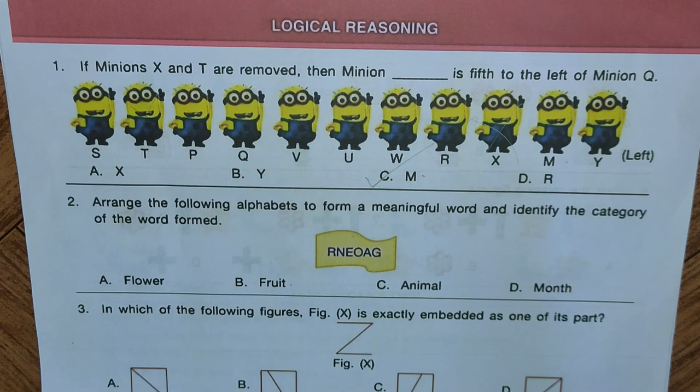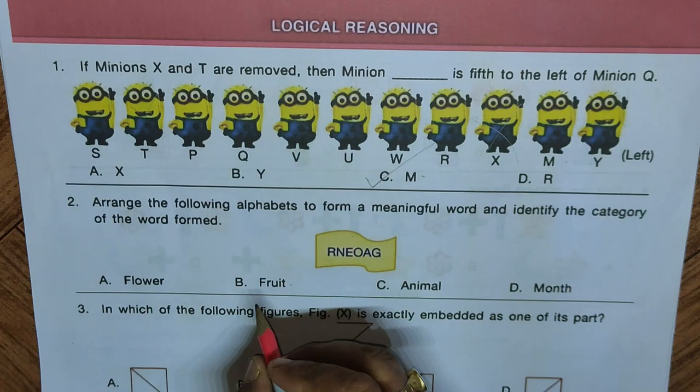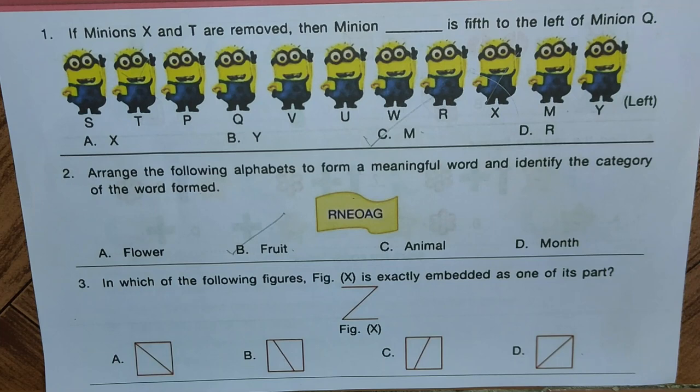Question two: arrange the following letters to form a meaningful word and identify the category. The letters are R, N, E, O, A, G. The options are: A — flower, B — fruit, C — animal, D — month. The word formed is ORANGE, which is a fruit, so we mark B as the answer.